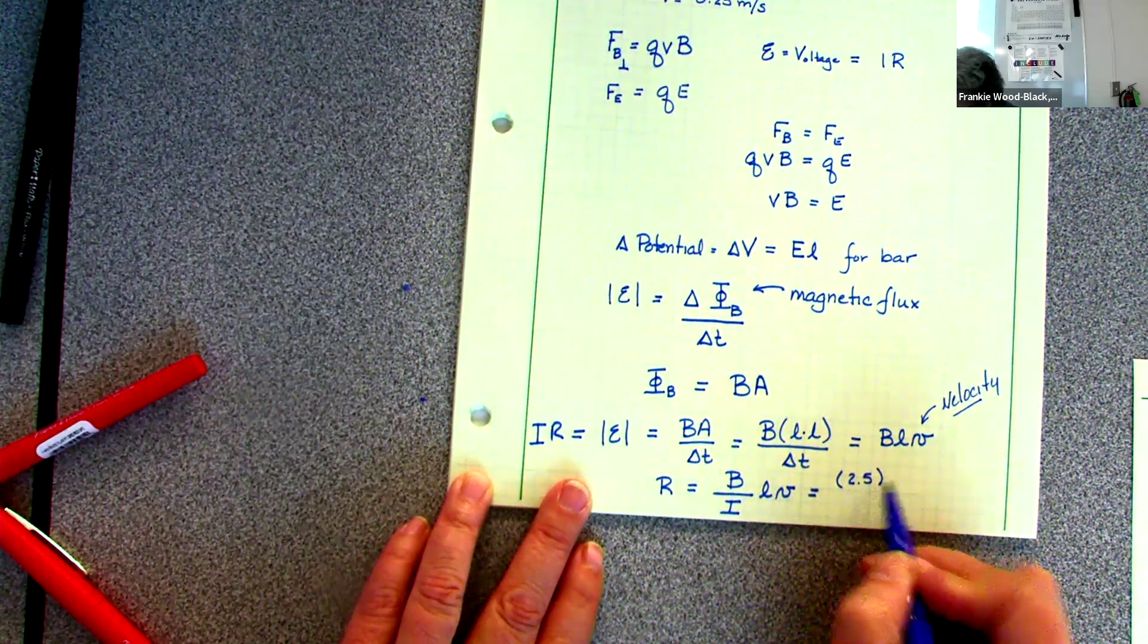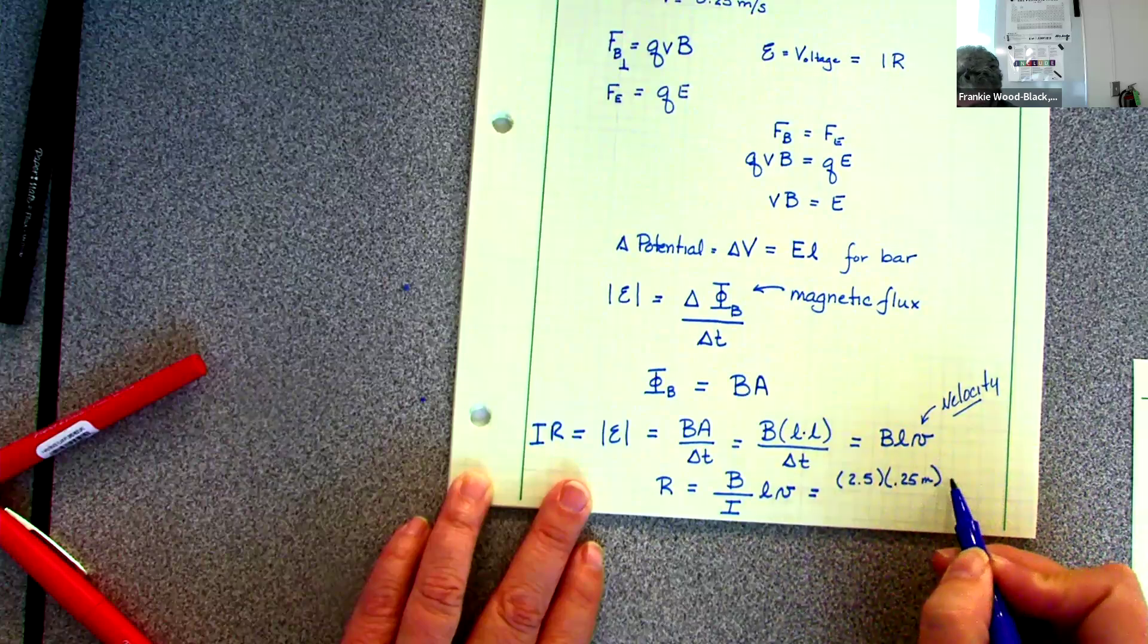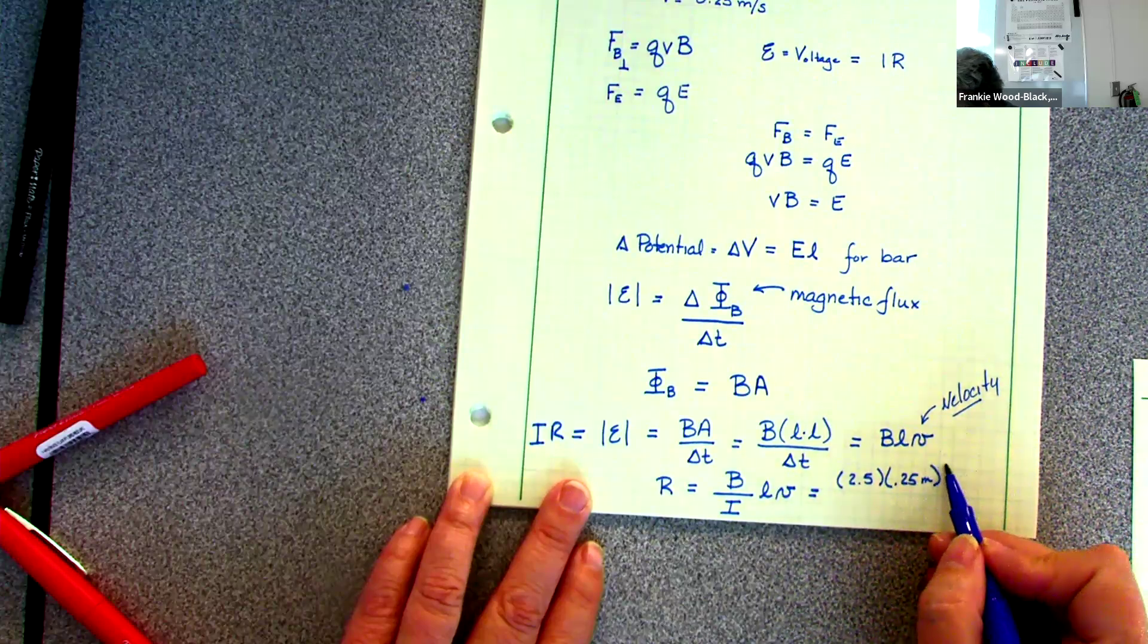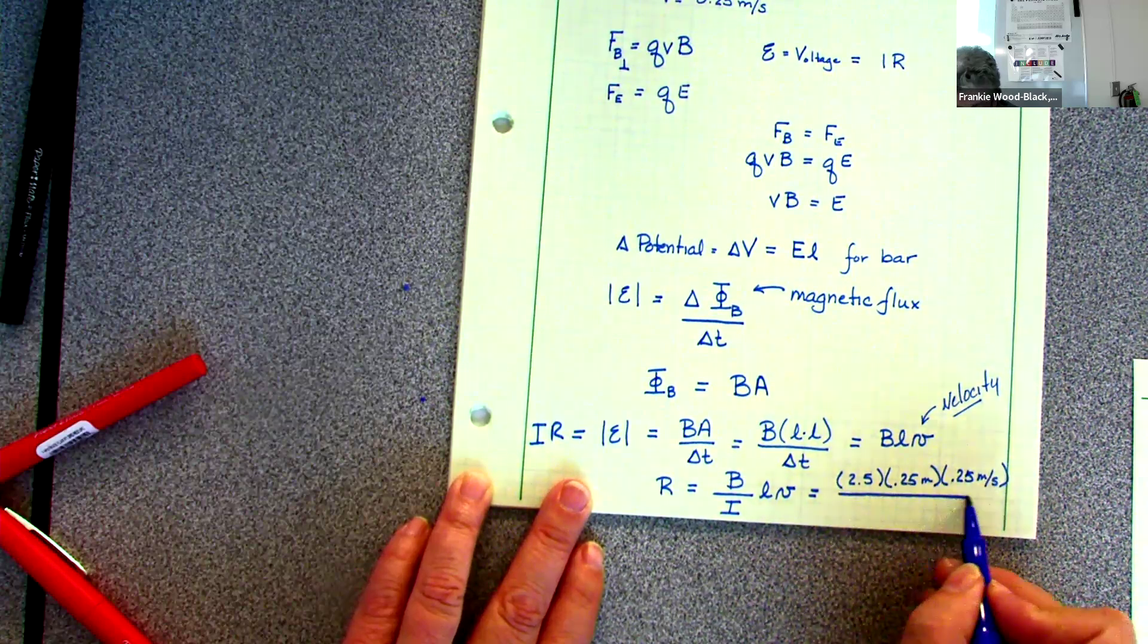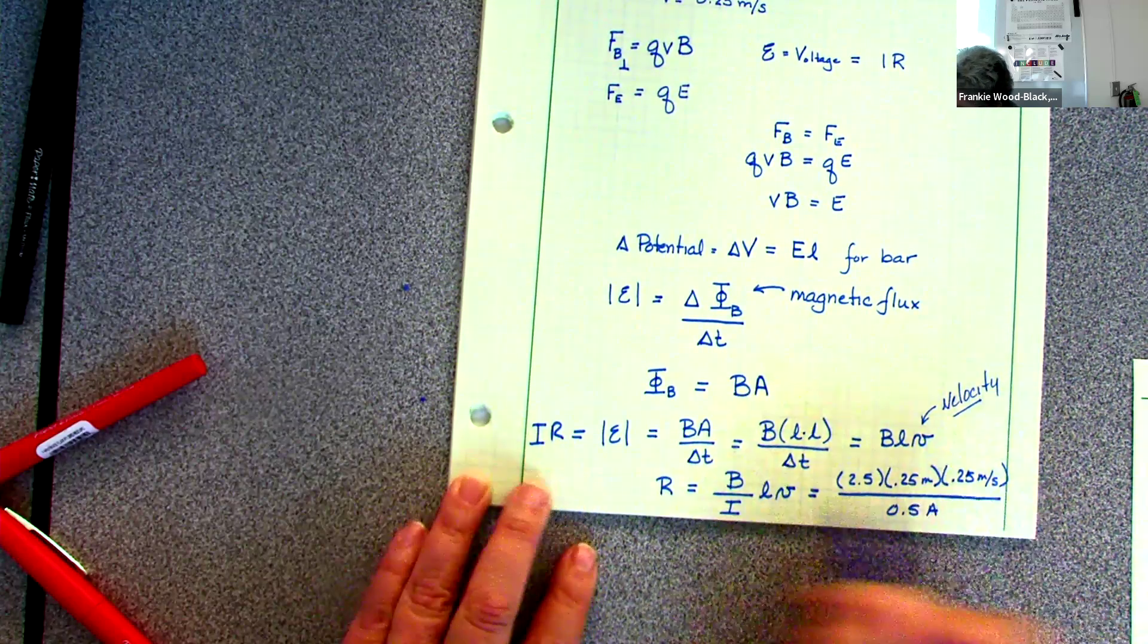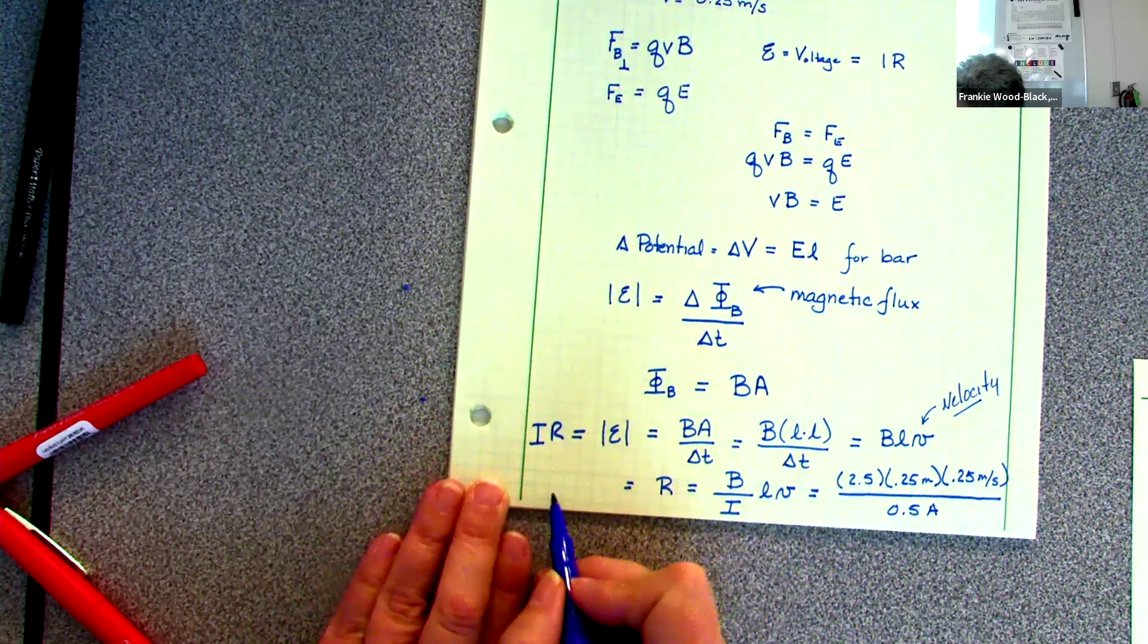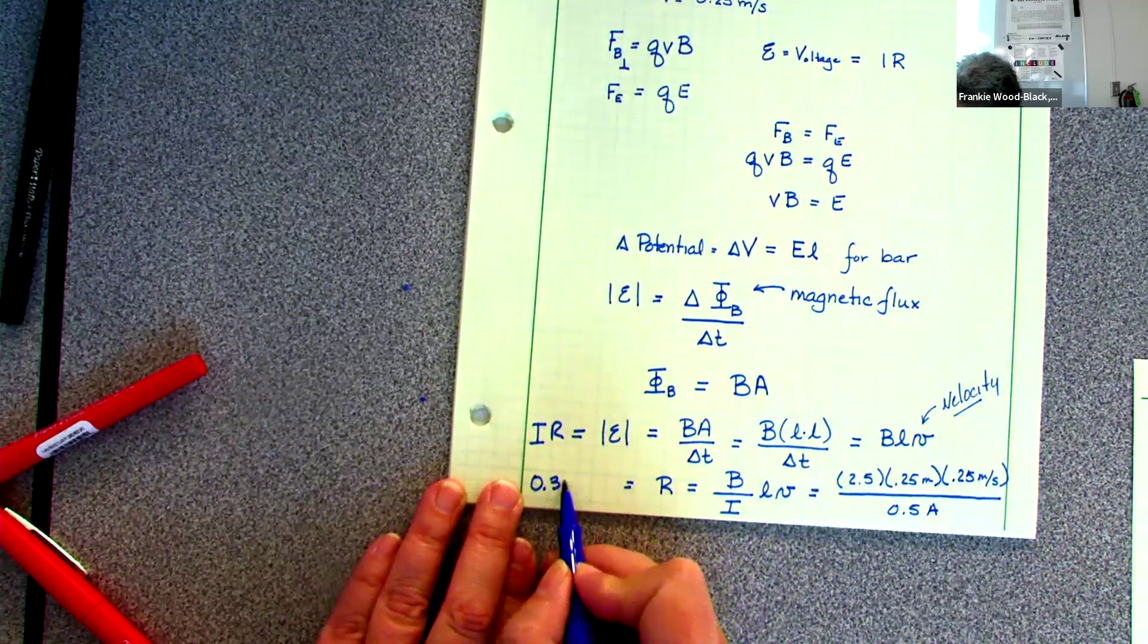2.5, 0.25 meters, 0.25 meters per second, all divided by the current that I want, which was 0.5 amps. And since I ran out of space, I will write it over here. That's 0.3125.